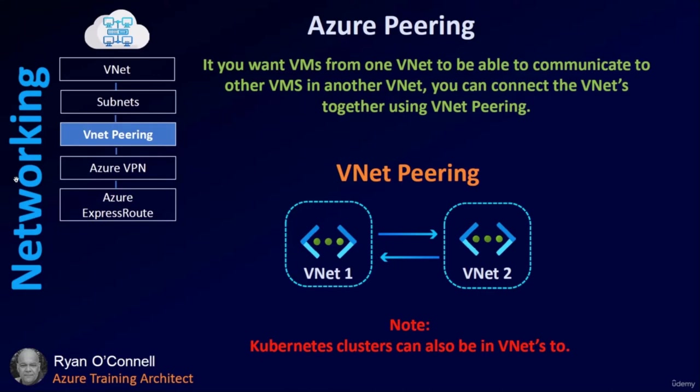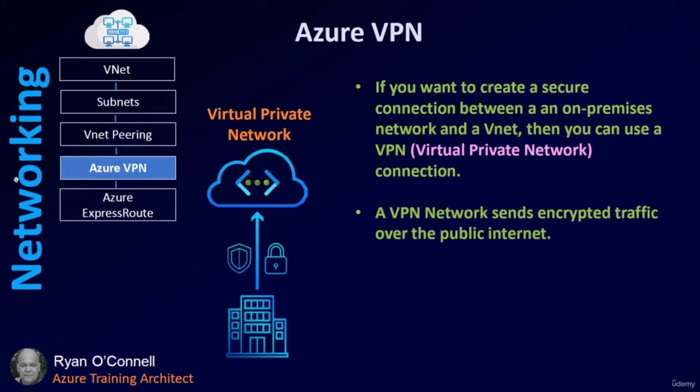You can have two different VNets and join them together so they can communicate if you set up peering. Note that Kubernetes clusters can also be in VNets. If you want to connect your on-prem network to Azure cloud, you can use a VPN — a secure, encrypted connection over the public internet between an on-premises network and a VNet.